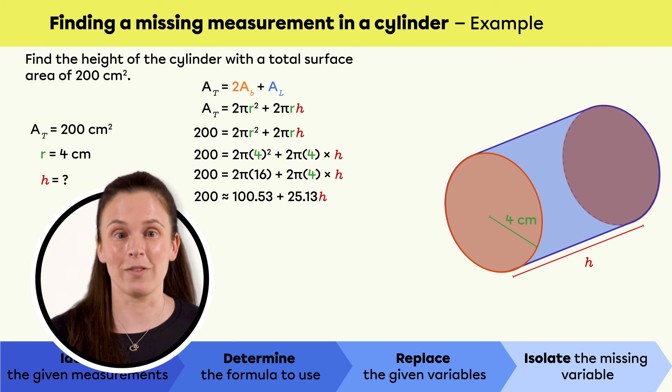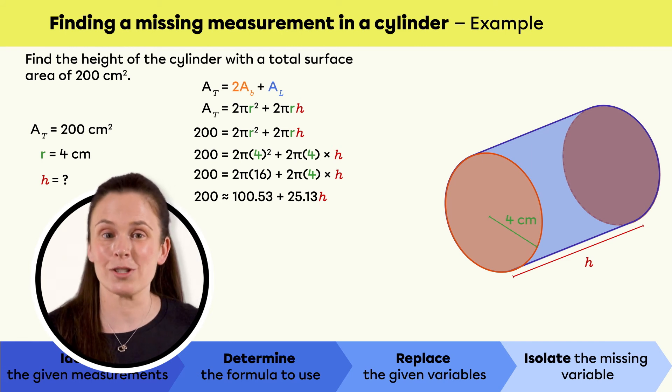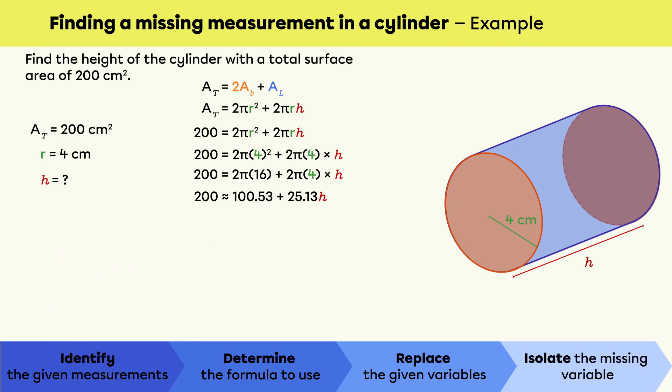So, when solving an equation, we must do the inverse operations in the reverse order of operations. Here, start by subtracting 100.53 from both sides of the equation.